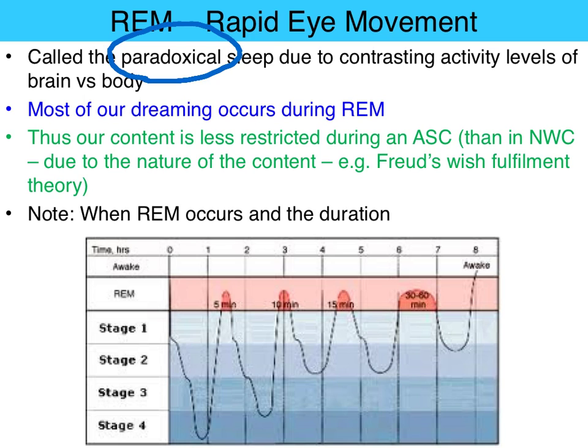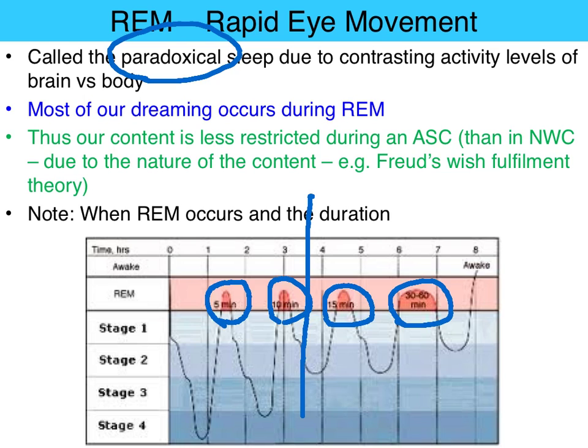Key point: it takes us about an hour and a half to get to our first hit of REM, and each time we get there it increases in duration. So if you were woken up 3 hours into your sleep and didn't go back to sleep, you would miss the vast majority of your REM and be REM deprived — with symptoms including irritability, difficulty concentrating, and interference with memory consolidation.